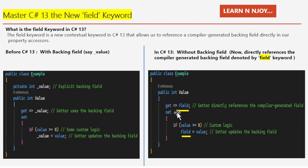In the setter, we check if value is greater than or equal to zero, then we use the compiler-generated field to assign the value — field equals value. So here there is no explicit underscore value field, no extra boilerplate, just a clean, simple property definition. The compiler takes care of creating the backing field behind the scenes.